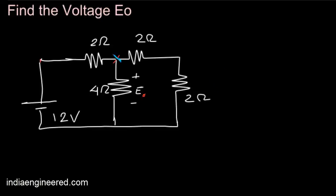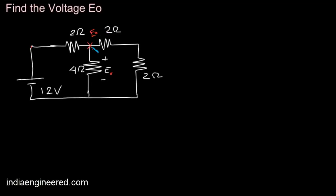We can write KCL at this point. That means we have this voltage here as E0. So (E0 minus 12) divided by 2 is the current in this direction. We are going to write the KCL equation here.